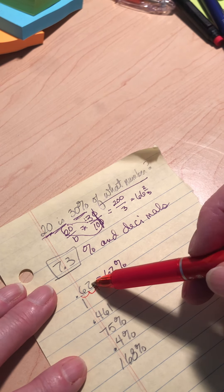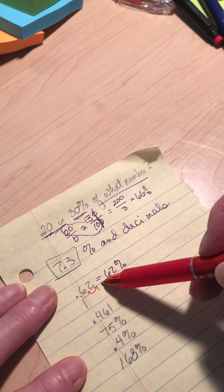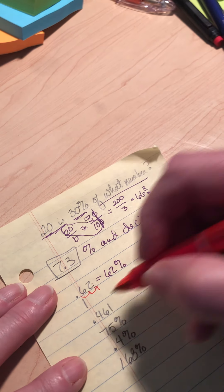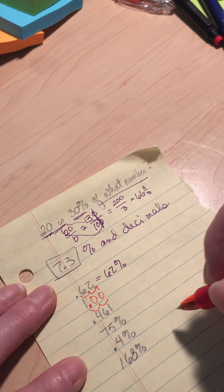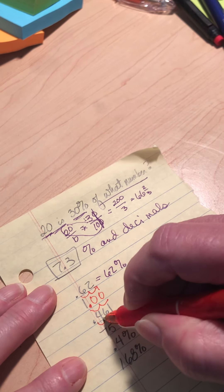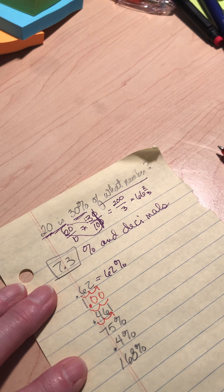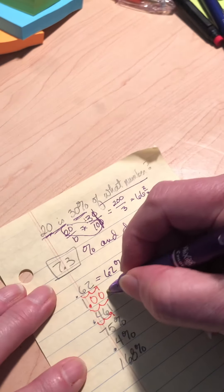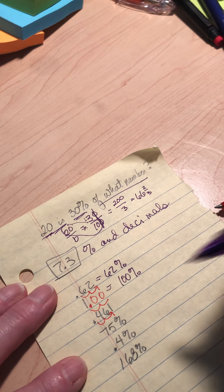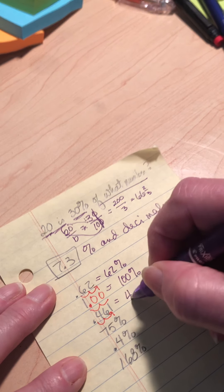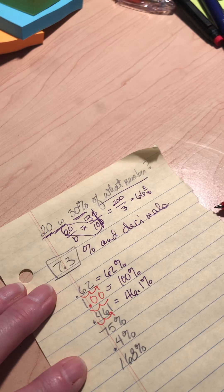So whenever I'm changing a decimal to a percent, I move it to the right twice. So one, I've got to add that decimal so I can move it twice. Here, I've got three, so I'm going to move it twice. So one is a hundred percent, which makes total sense. A hundred hundredths is equal to one. And this is going to be 46.1%.